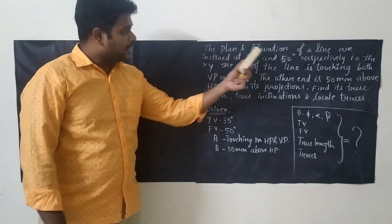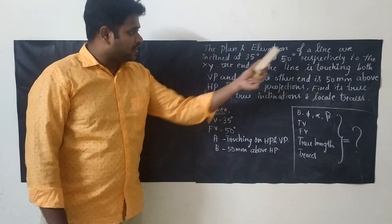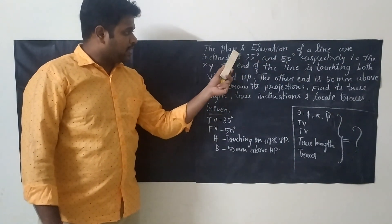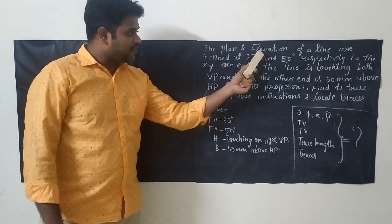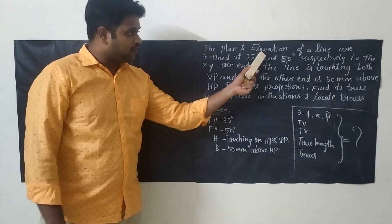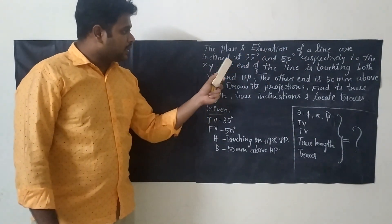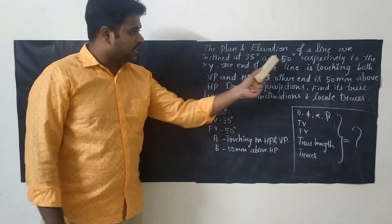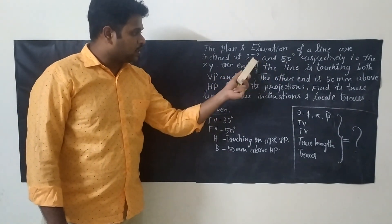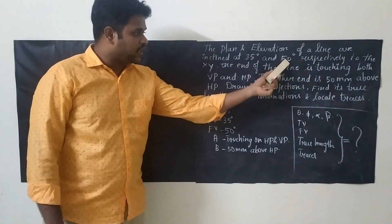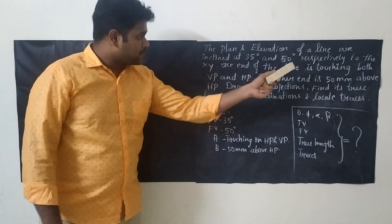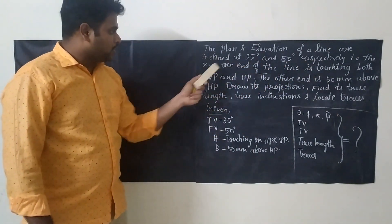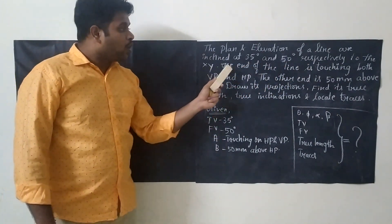The plan and elevation of a line — plan means top view, elevation means front view — are inclined at 35 degrees and 50 degrees respectively to XY. So 35 degrees is for the top view and 50 degrees is for the front view, as written here respectively to XY.